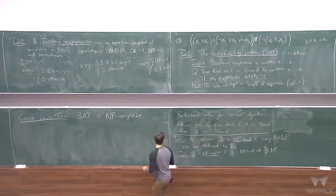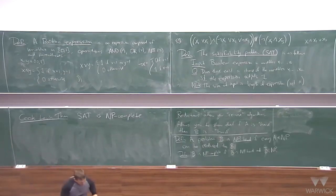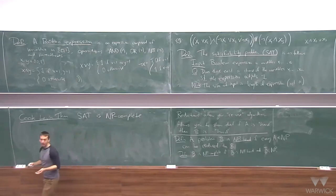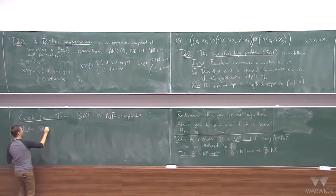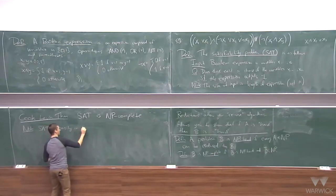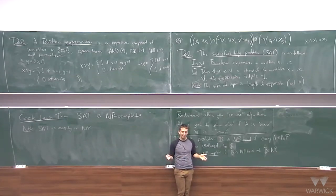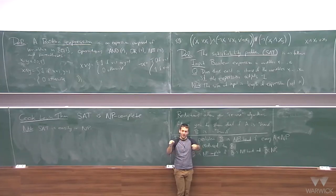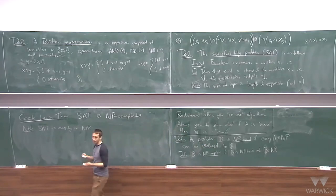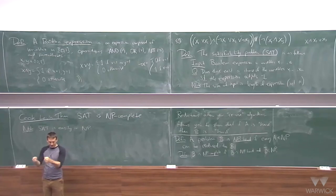Why is SAT in NP? Because if you have a Boolean expression and I give you values of x1, x2, up to xn and claim this satisfies the expression, you could easily check by plugging in the numbers and doing the operations — in polynomial time you'd verify whether it's true. The certificate is simply an assignment of the variables.